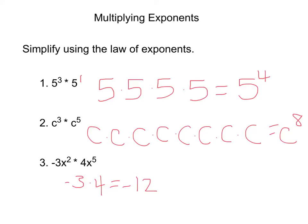Now I just have to multiply my variable x with its exponents. So x squared would be x times x, and then x to the fifth would be x five times. So this equals x to the seventh power. I add that to my negative 12, it becomes negative 12x to the seventh power.